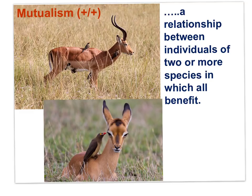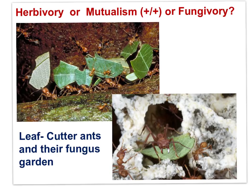Oxpeckers pick off ticks and other parasites, receiving nutrition in the process, while the antelope benefits from reduced parasitism and disease. Here's an interesting example: leafcutter ants harvest plant material — this is herbivory — and take the leaves back to the nest, where they chew the leaves with saliva and provide the mash to a fungus that grows within the nest. The ants don't eat the leaves; the ants eat the fungus. The fungus would not survive without the ants, even though the ants eat the fungus.